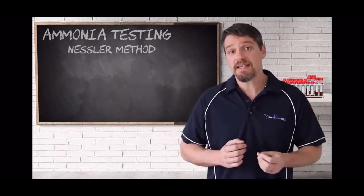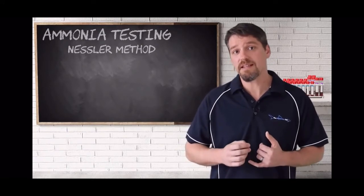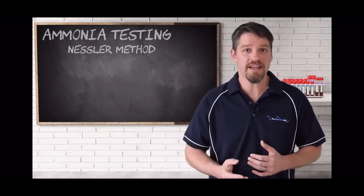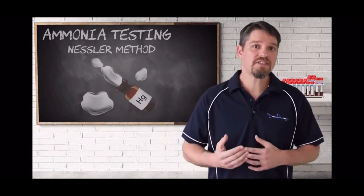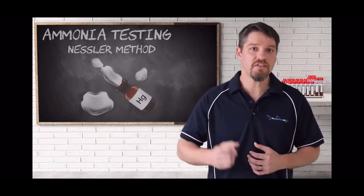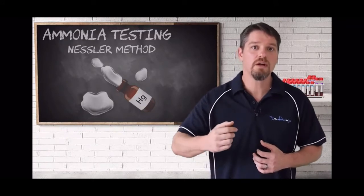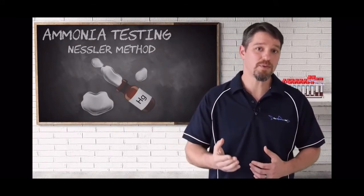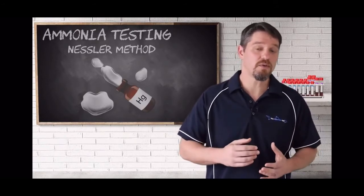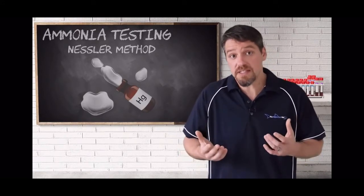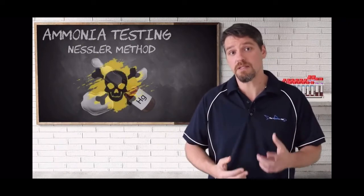Nestler-based test kits have several disadvantages. The first is that the Nestler reagent contains mercury, and care should be taken when handling and disposing of the reagents. I often see hobbyists using their fingers to cover the test tubes while they're mixing the water instead of using the provided caps with the test. And this is not good practice. Not only can it interfere with the test results, but it can also be a potentially dangerous practice as that mercury can be toxic.